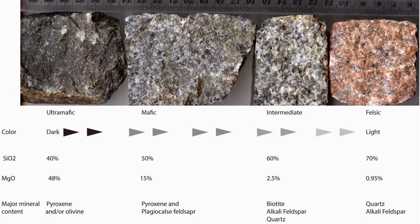This shows the differences among the types of Igneous Rock — ultramafic, mafic, intermediate, and felsic — in terms of color, silica content, magnesium oxide content, and major mineral content. Please take note of this.